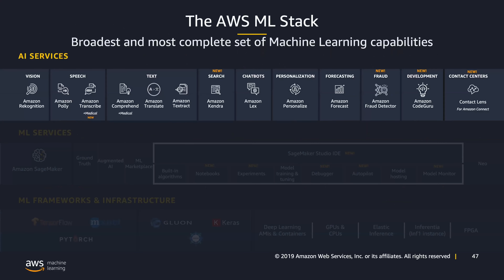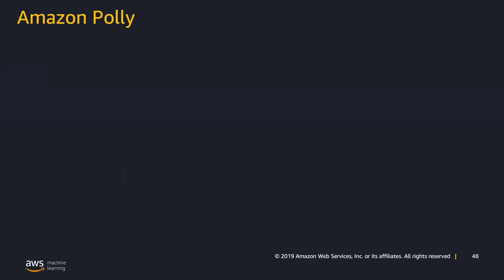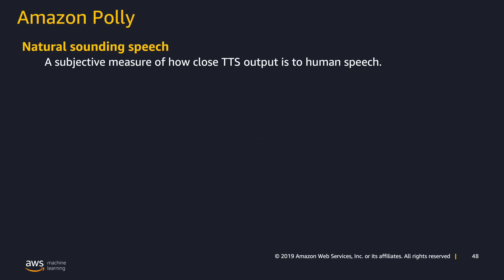Now we can move up to that top level of the stack: the AI services. These are services we've worked on internally, perhaps for Amazon.com, that we've opened up as APIs developers can just access. They don't need any machine learning expertise. And just to note — this is for every developer, not just those without ML expertise. If you find something here that fits your needs, it makes sense to take advantage of it first before recreating it. Amazon Polly is text-to-speech, a service that gets used quite a bit.